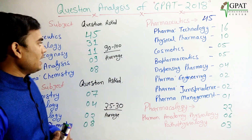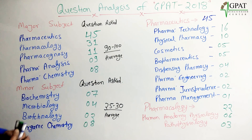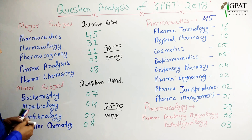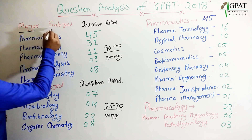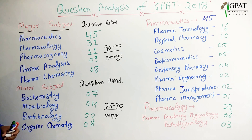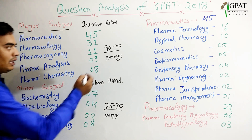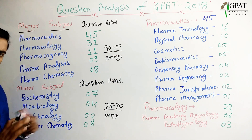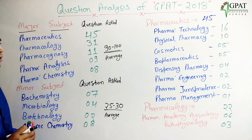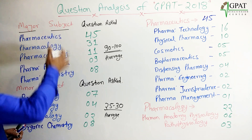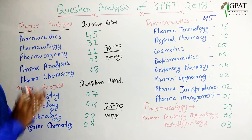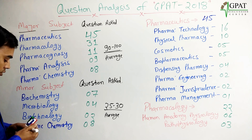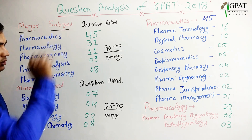Here I have discussed which subject is your major subject. Major subjects are those subjects in which approximately, combined, about 90 to 100 questions are asked each year. These 90 to 100 questions may vary according to subject, but here I am discussing the GPAT 2018 question analysis. So here, in 2018,